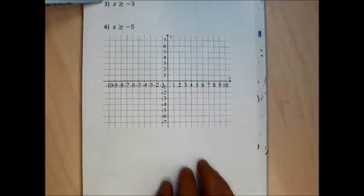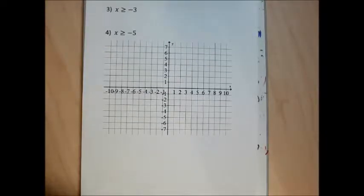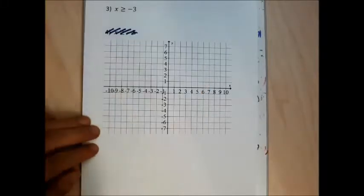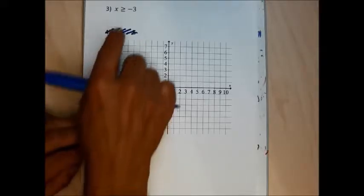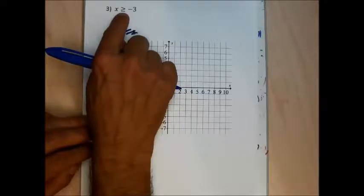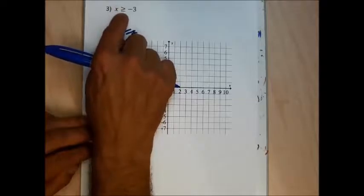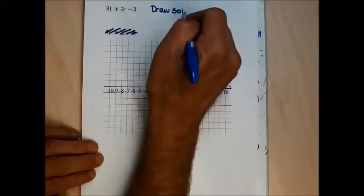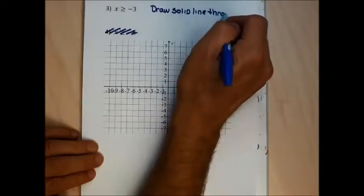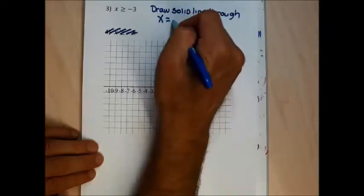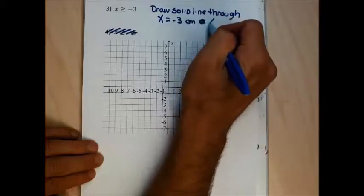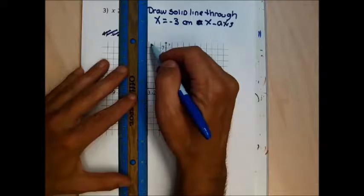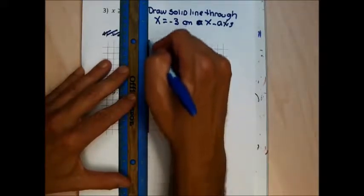For number 3, you're supposed to identify any point that has an x-coordinate bigger than or equal to 3. For my number 4, I'm supposed to identify all the points with x-coordinates bigger than or equal to negative 5. Let me do number 3. I'm going to start by identifying all the points with x-coordinates equal to 3, and I'm going to use a solid line because those points satisfy x ≥ 3 and need to be included.